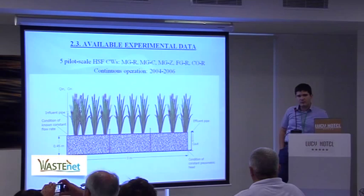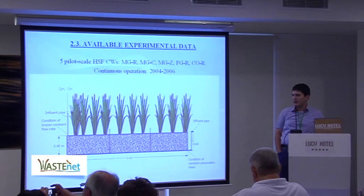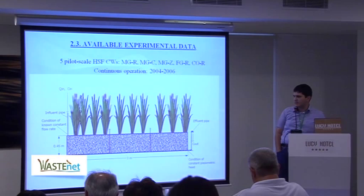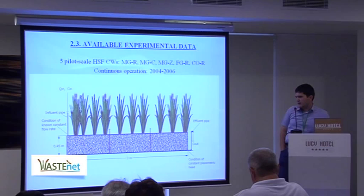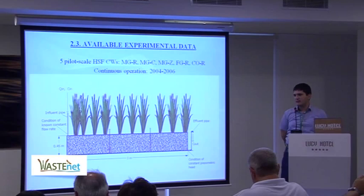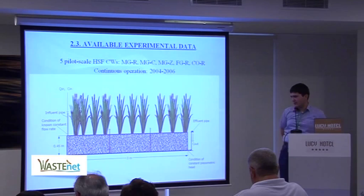We made a computational research, simulating available experimental results collected from a previous study in our laboratory — the Laboratory of Ecological Engineering Technology in Xanthi — conducted between 2004 and 2006. There were five similar tanks, each with dimensions of 3 meters length and 75 centimeters width. The height of each tank was 1 meter, and the height of the porous material was 45 centimeters. The main difference between tanks was each had a different combination of porous material and plants.